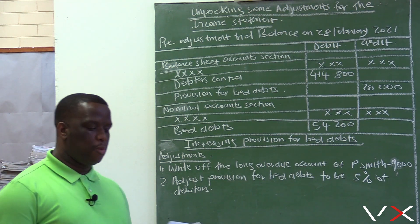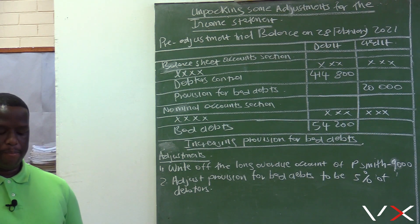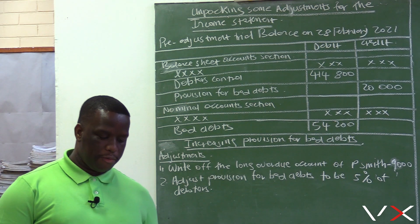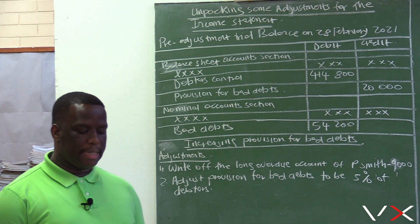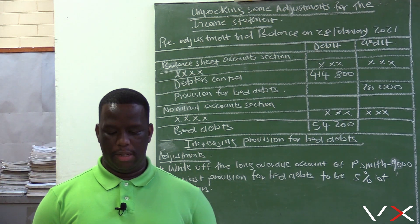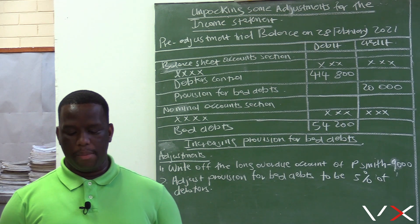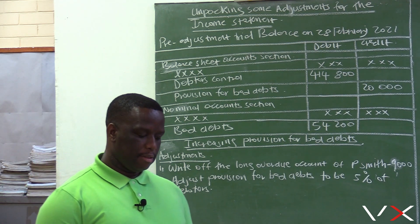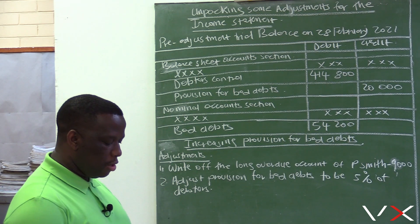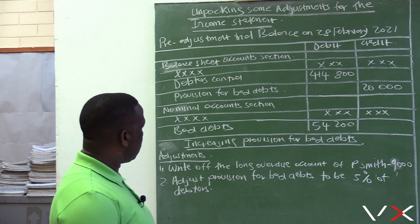Provision for bad debts is the total amount of doubtful debts that needs to be written off for the next accounting period.